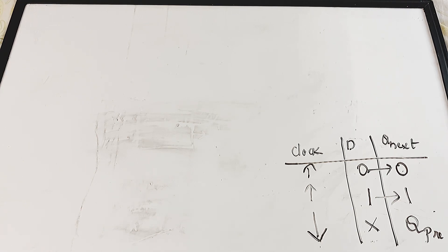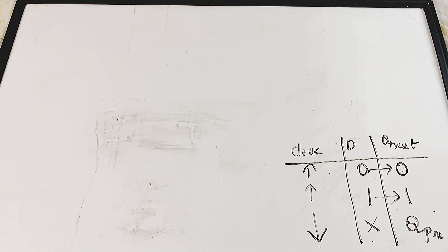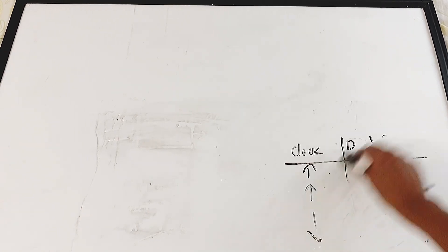Question six: what will be the output from a D flip-flop if D equals 1 and clock is low? Options: A - no change, B - toggle between 0 and 1, C - 0, D - 1. The correct answer is A - no change. Whenever the clock is not rising or the clock is down, the output will not change.